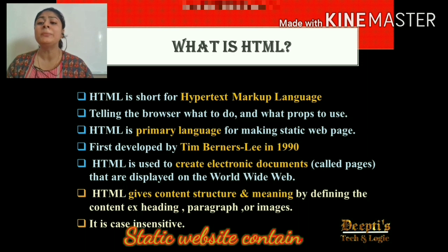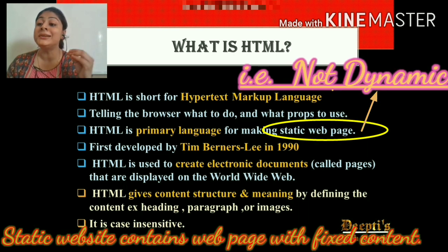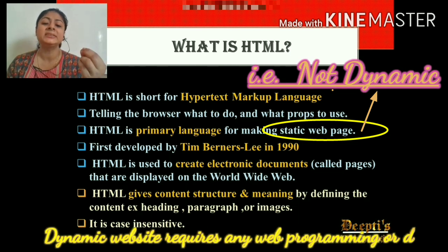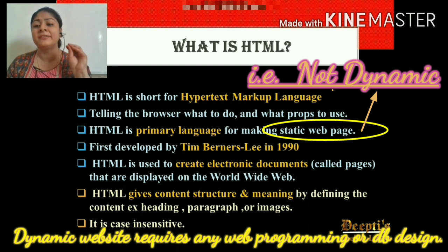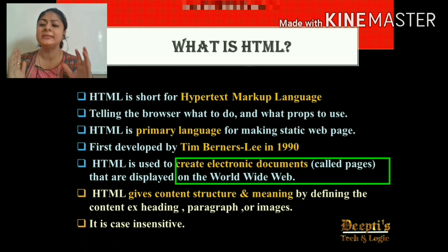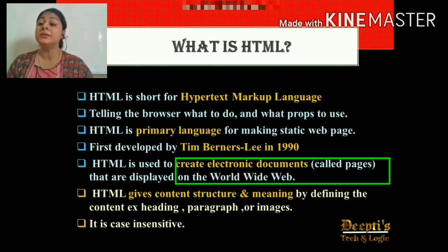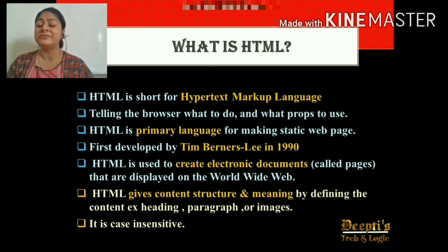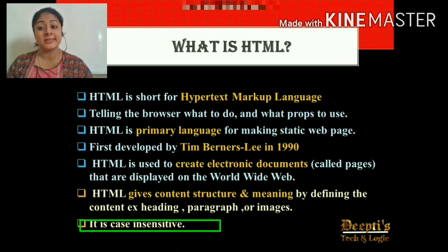You should know the meaning of static. If I do not use JavaScript in my website, it means it is only displaying content — it does not take input. HTML was developed by Tim Berners-Lee in 1990 and it is used to create electronic documents. Whatever pages you see on the internet are called web pages. There is a worldwide web — a collection of many web pages — and a website means a collection of interlinked web pages.